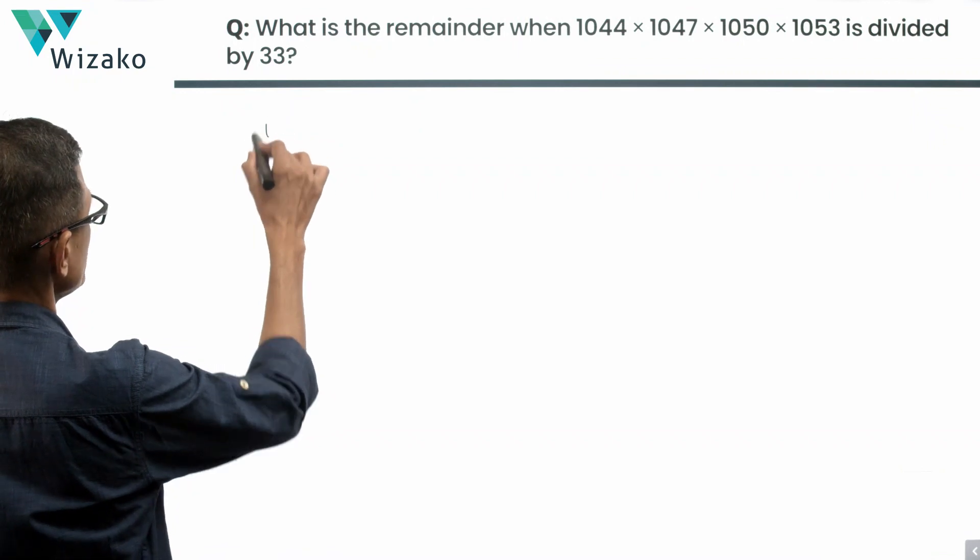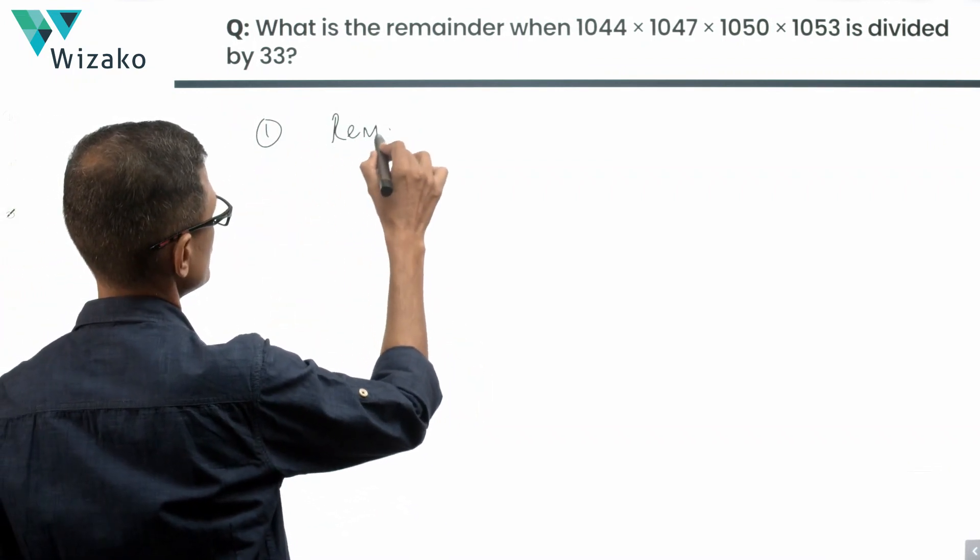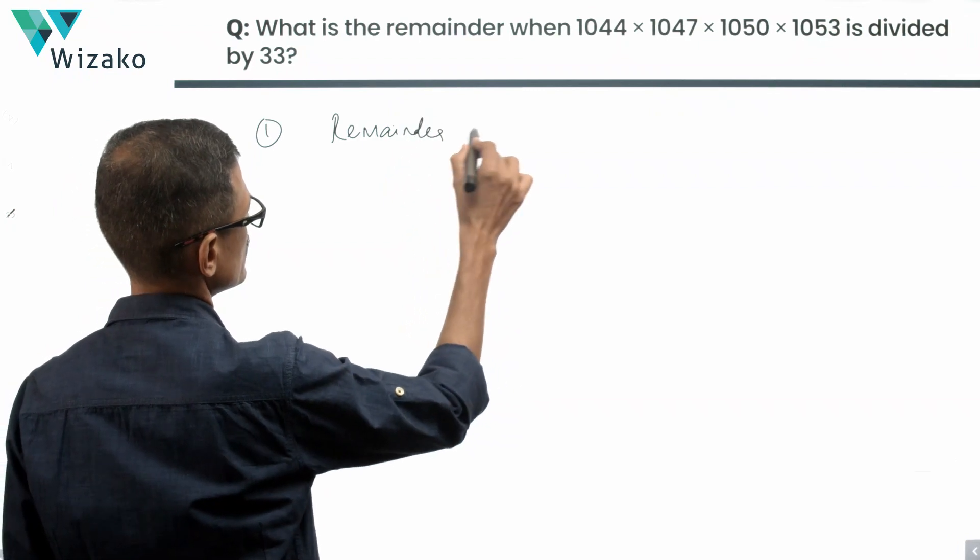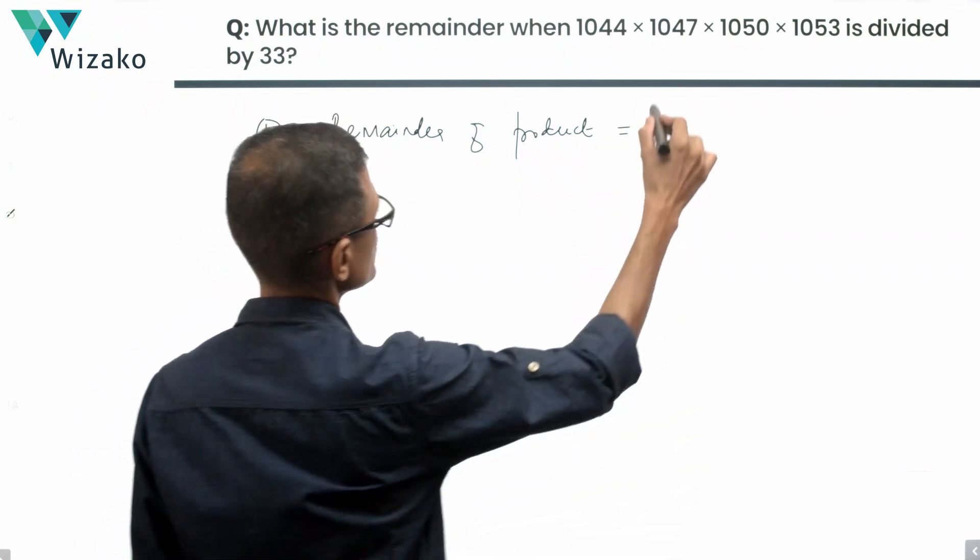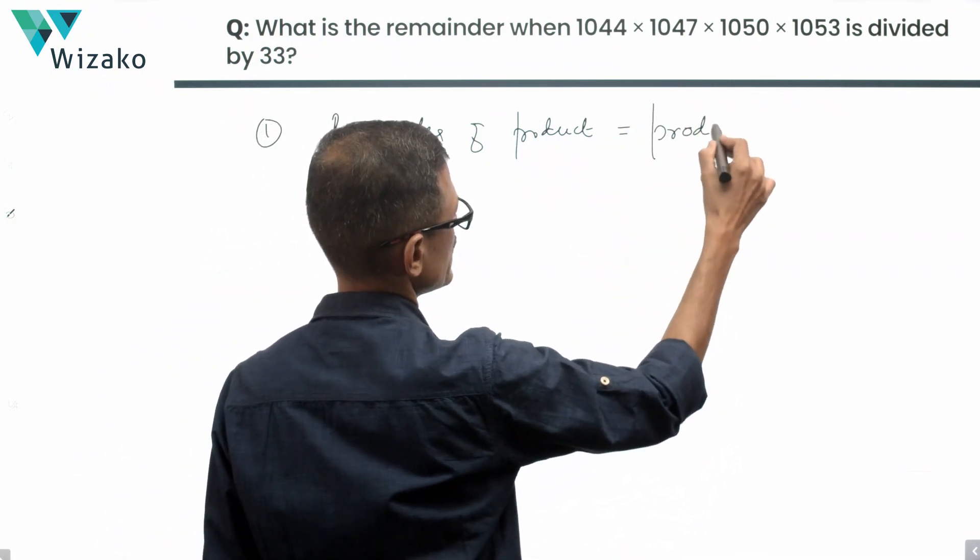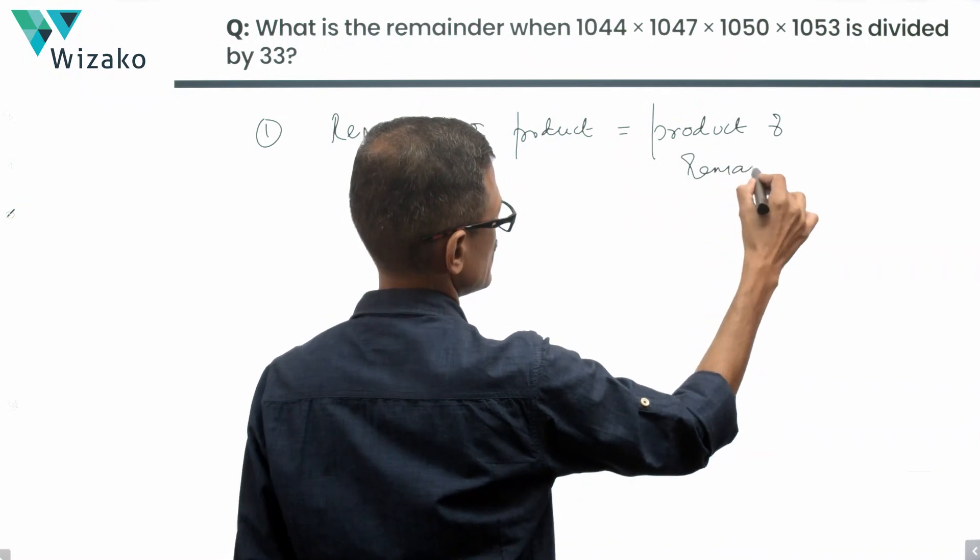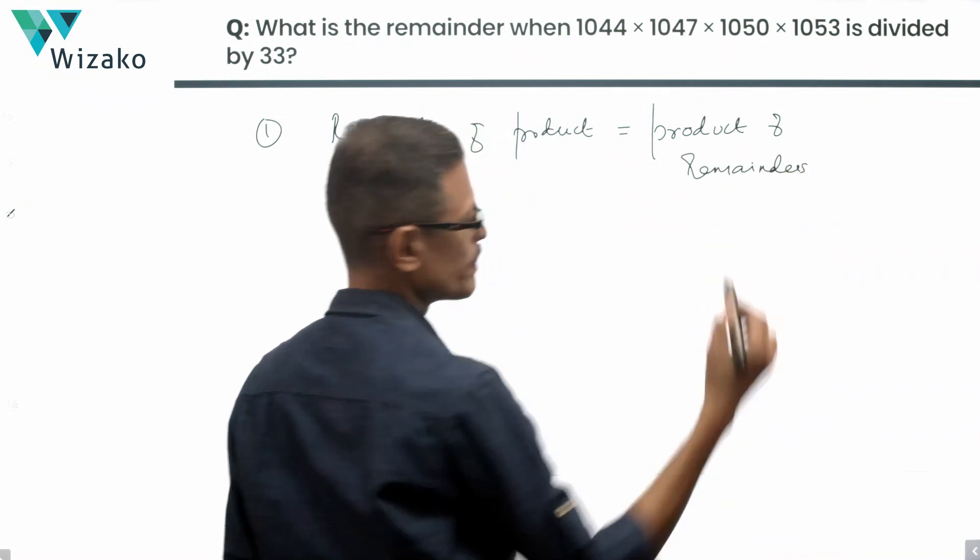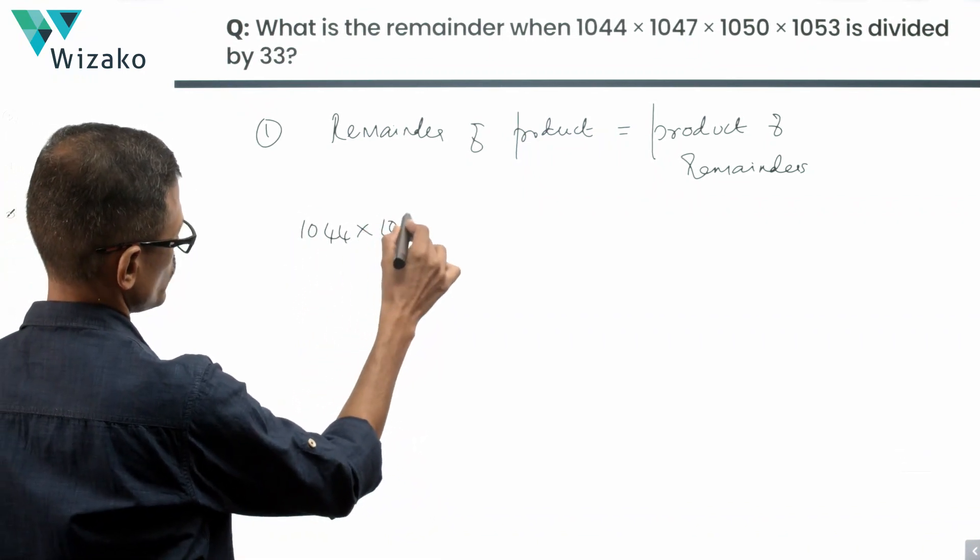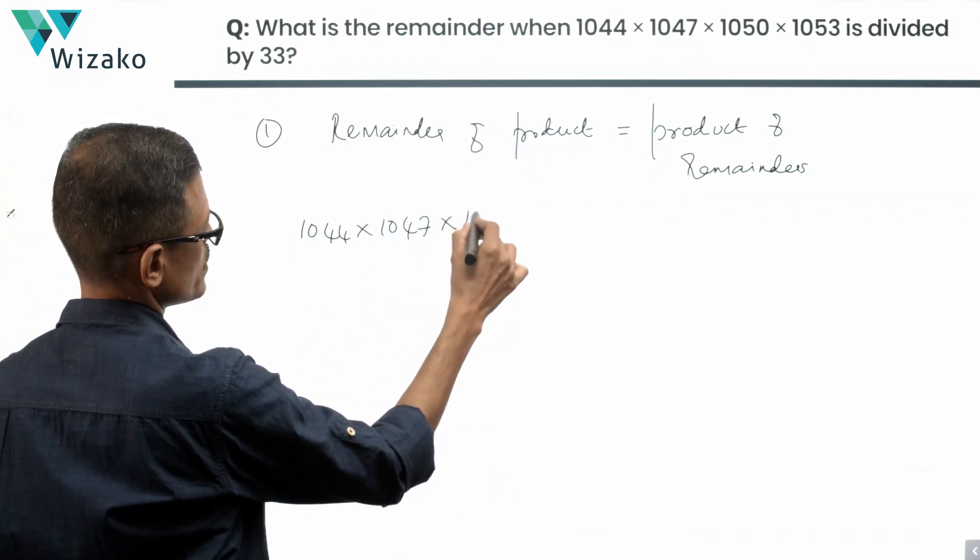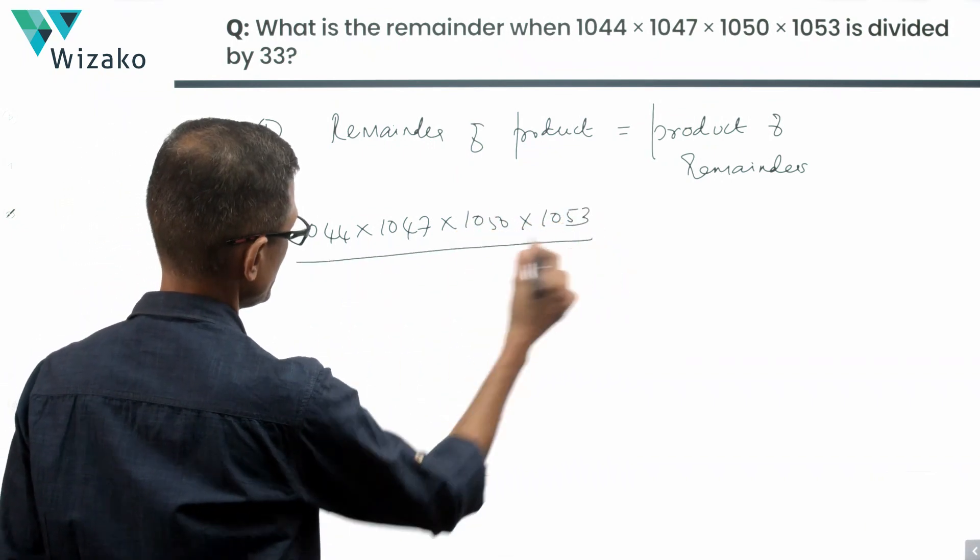The first concept I'm going to use is that the remainder of a product of a set of numbers is equal to the product of their respective remainders. We're trying to find the remainder when 1044 times 1047 times 1050 times 1053 is divided by 33.